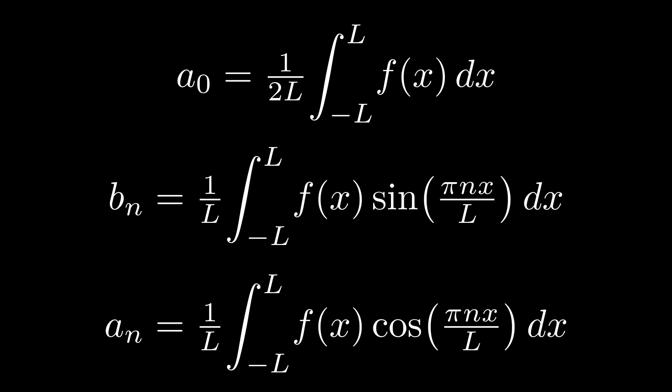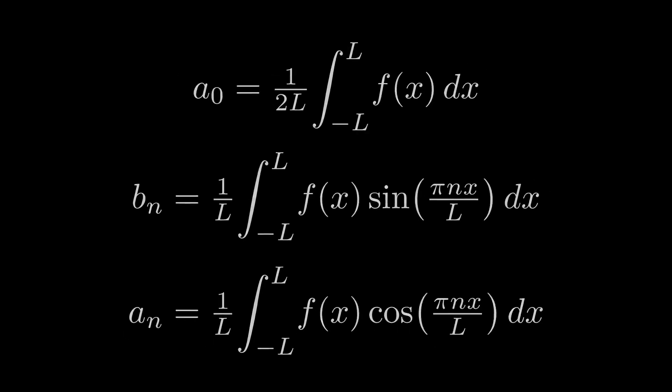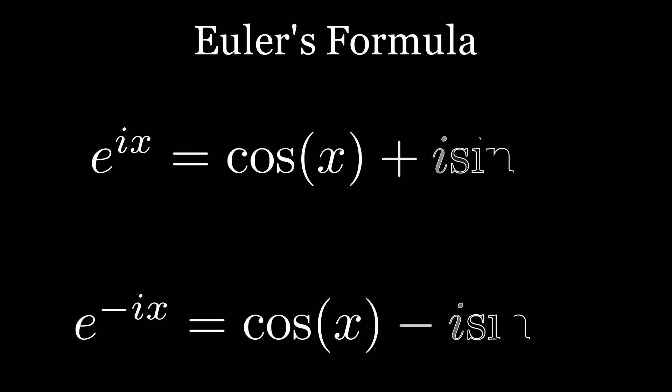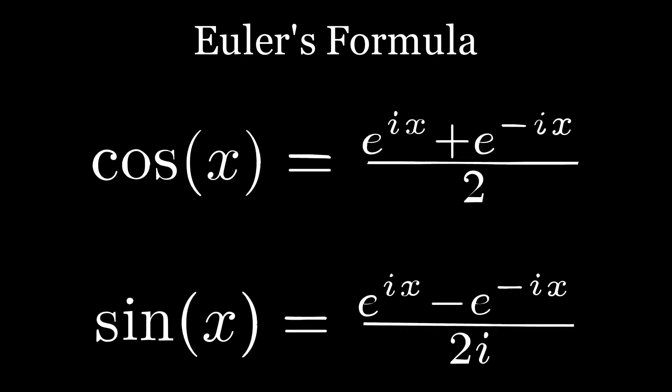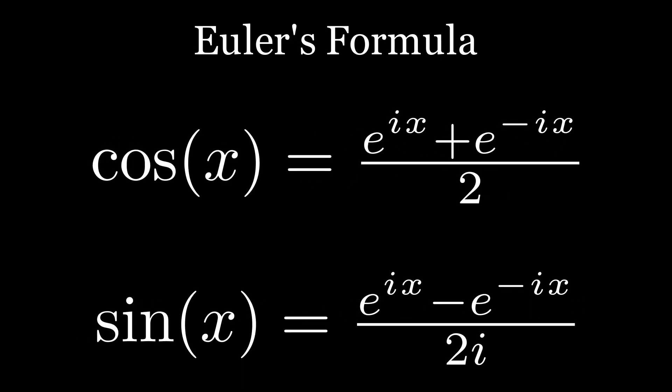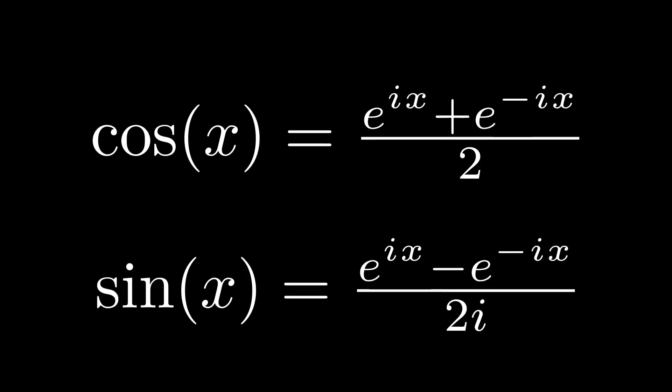Moving on, I want to discuss a more compact way to write the Fourier series. Recall first Euler's formula. e to the i x equals cosine of x plus i sine of x. Using only this formula, we can find an expression for cosine and sine of x purely in terms of the complex exponential function. We can then substitute these expressions into the initial formula for the Fourier series.